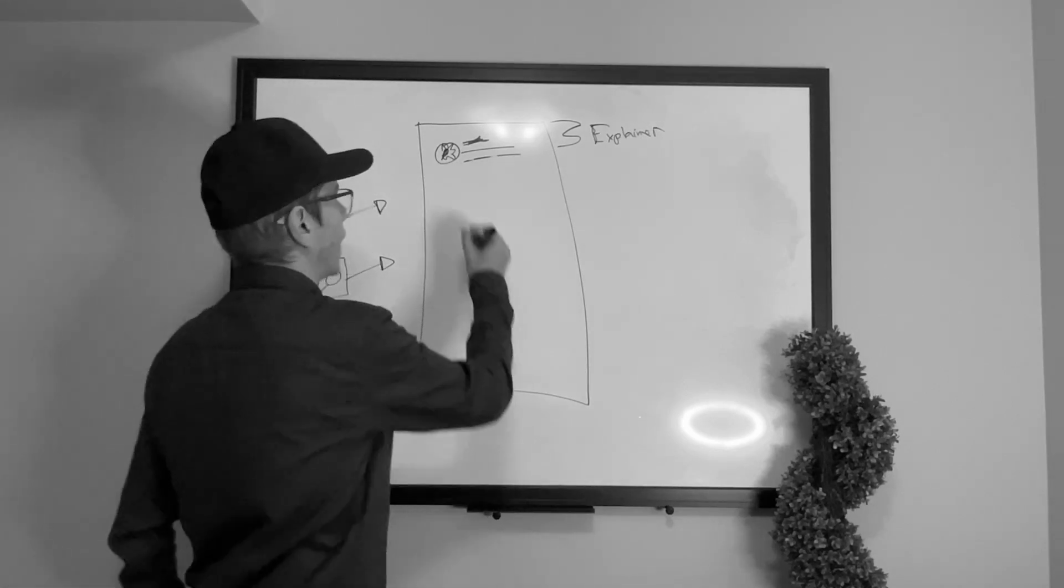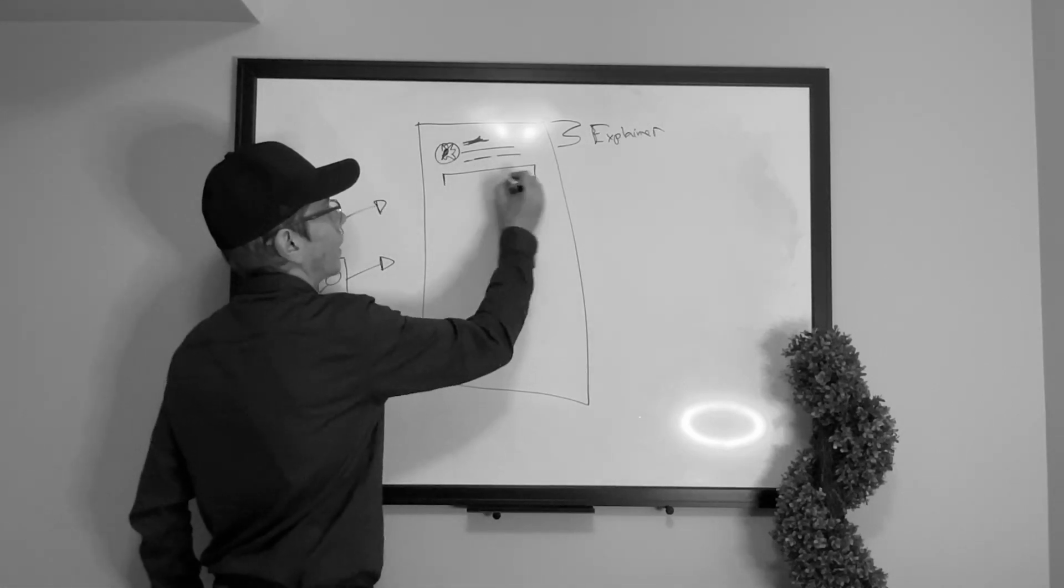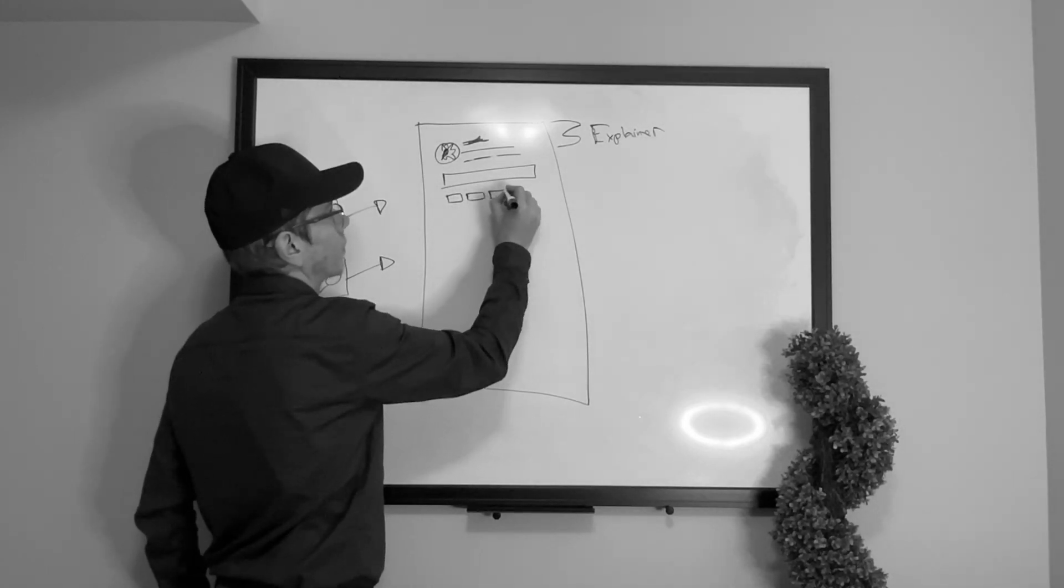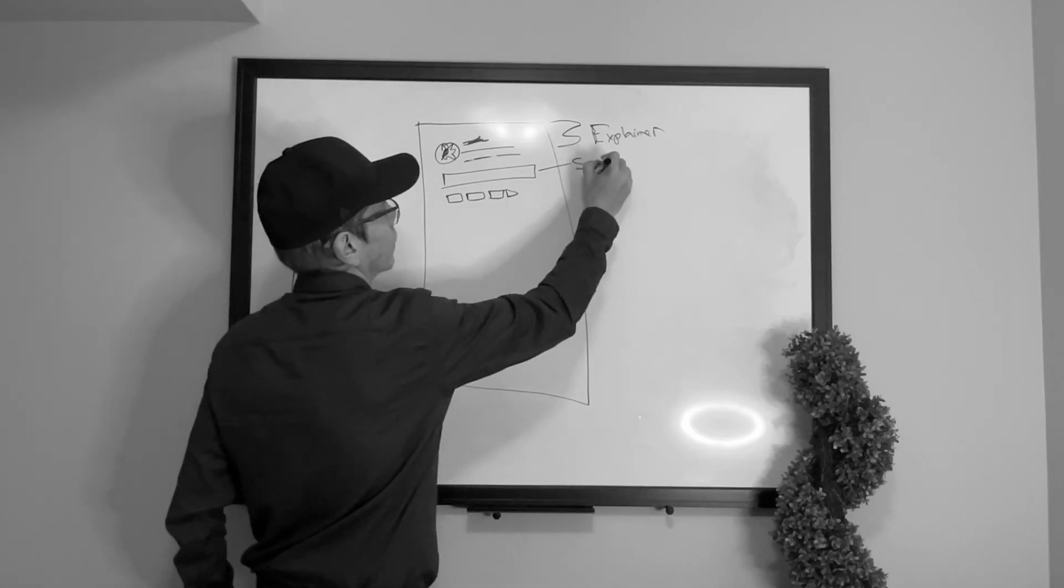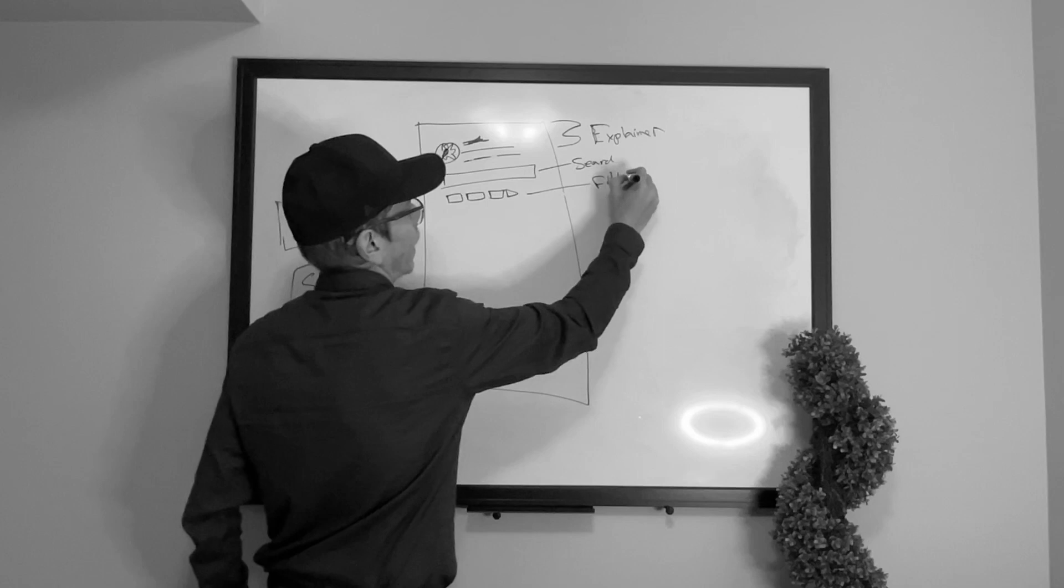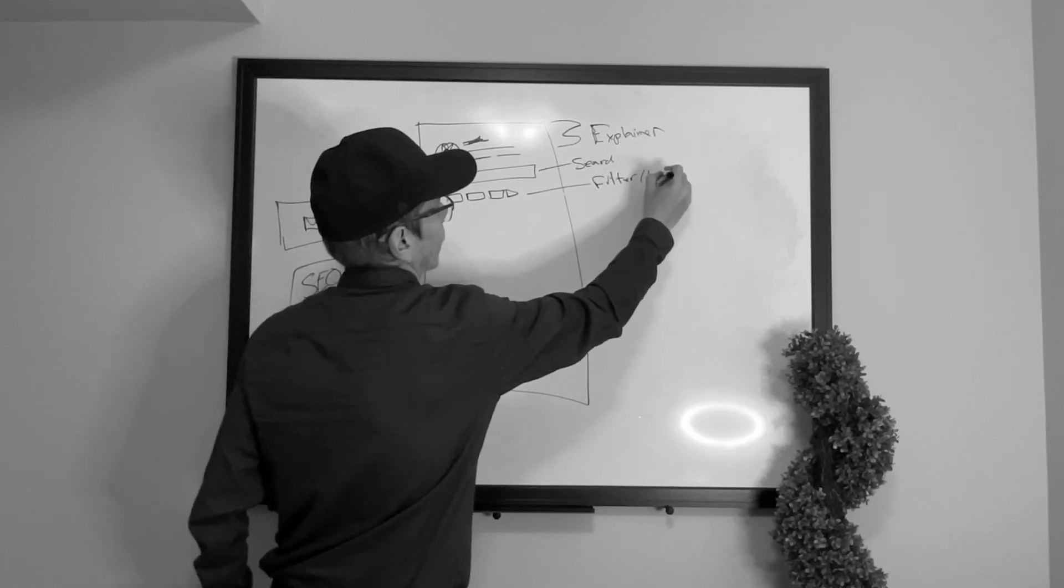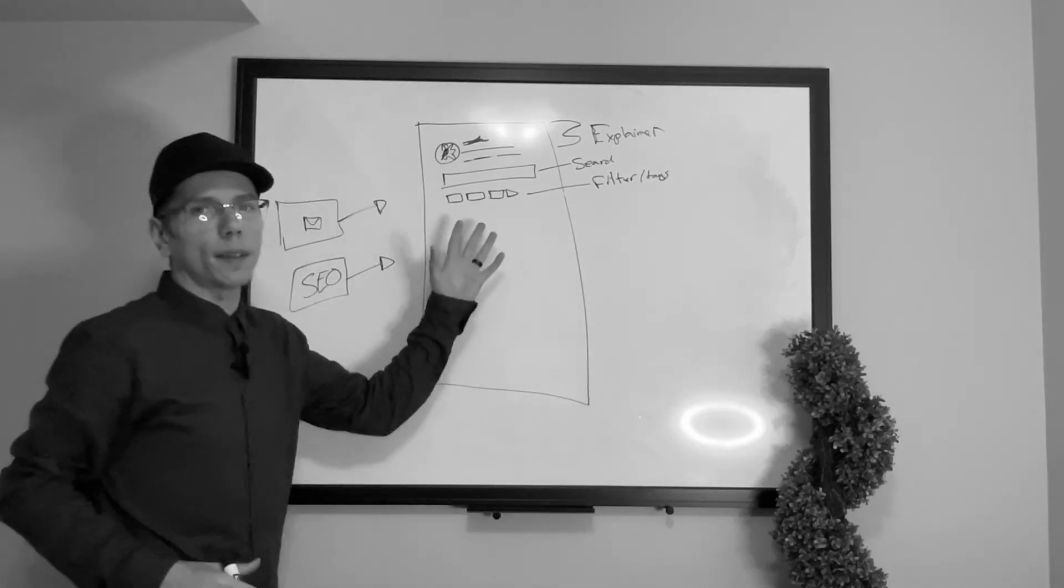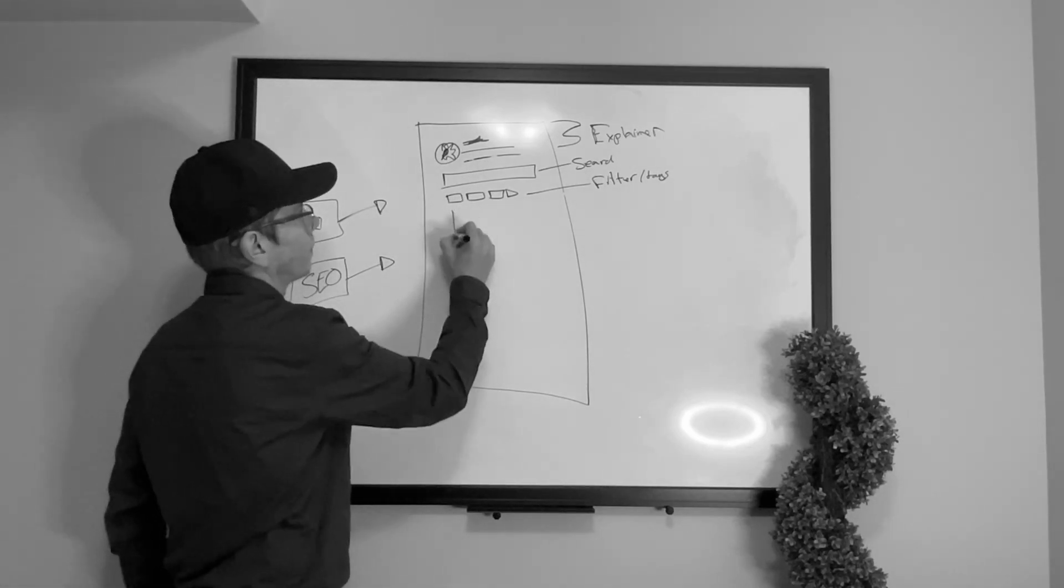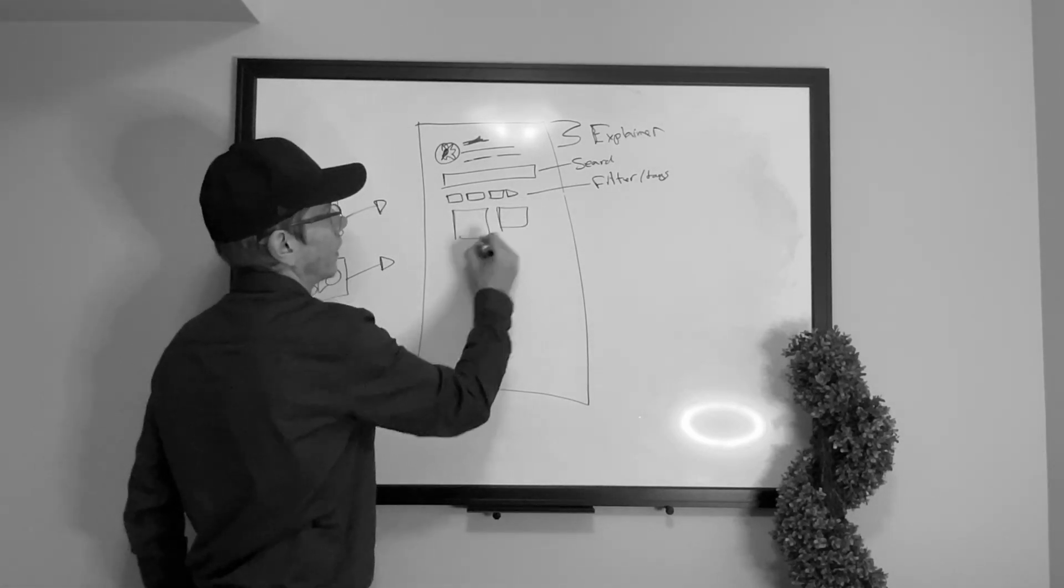We might want to have a search bar and we're gonna have some kind of tabs or some kind of filter. So this is search, this is filter or tags, you know, categories, whatever, some kind of navigation. So we have tabs, some kind of way to sort these out.